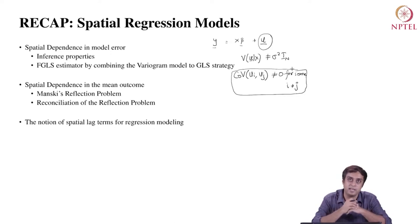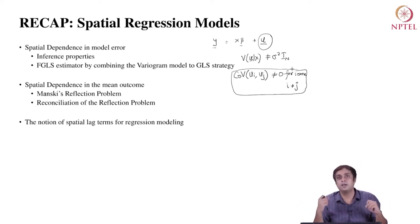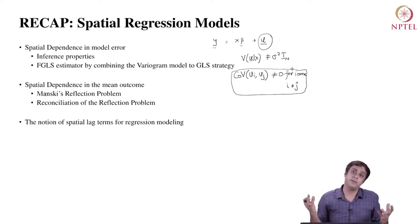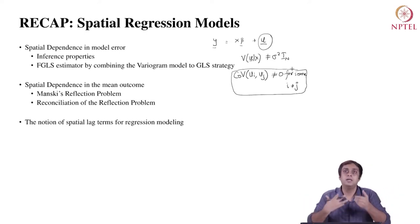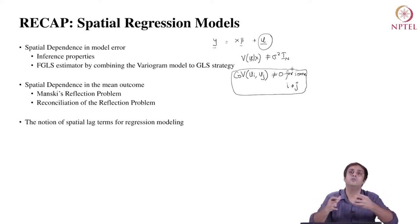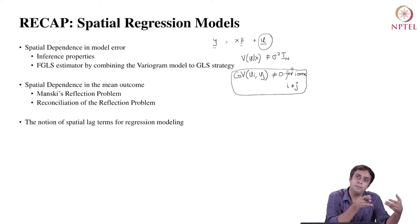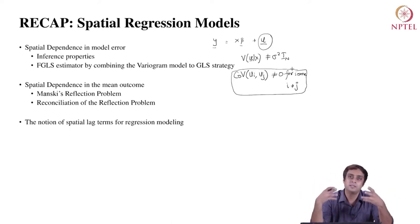The second type of spatial dependence is through Manski's reflection problem. This applies to settings such as a peer network, where the performance of any student is not just a reflection of their own aptitude and effort, but also reflects the peer group they belonged to. An individual's performance is a reflection of the peer group's performance and vice versa. We then studied methods for reconciling this reflection problem, and introduced spatial lags in regression models to generalize how to work with spatial dependence — either in the outcome mean or in the error term — in more generalized settings like irregular lattices.